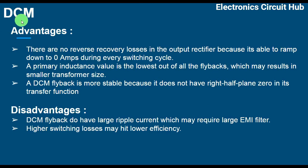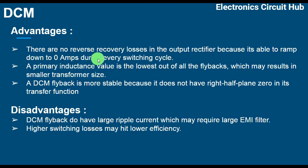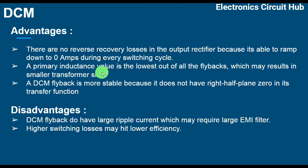The advantages of discontinuous conduction mode: there are no reverse recovery losses in the output rectifier because the secondary current ramps down to zero amps during every switching cycle. The primary inductance value is the lowest of all flyback topologies, which may result in a smaller transformer size. A DCM flyback is also more stable because it does not have a right-half-plane zero in its transfer function.